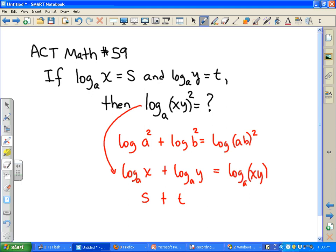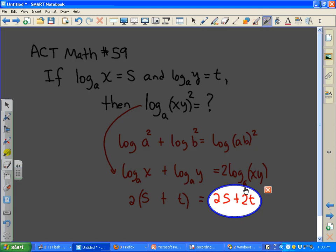That would be log of xy. But we're looking for log of xy quantity squared, which means you're going to have two of these. So log of xy squared is actually two of those. So your answer is 2s plus 2t. That would be your final answer to this problem.